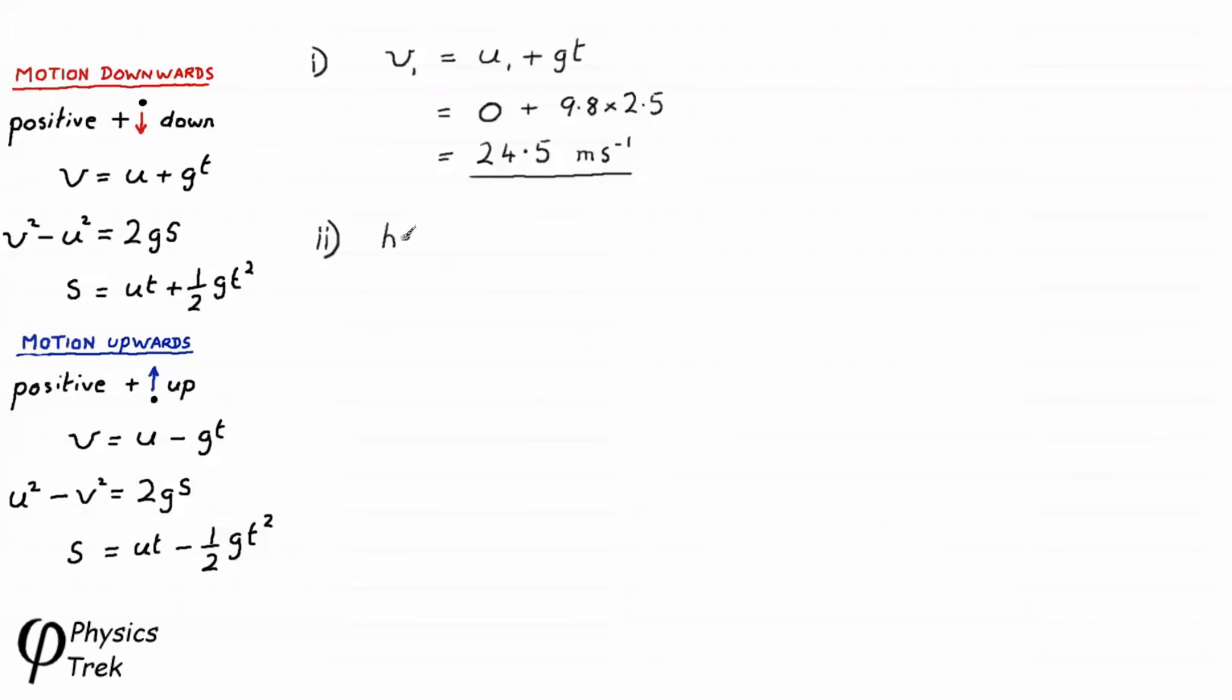And now to the second part. Okay. The height of the cliff, we call it s subscript c, is given by v1 squared minus u1 squared is equal to 2g sc. We need to make sc the subject. So let's just first change the equation around. So we have 2g sc is equal to v1 squared minus u1 squared. We need sc to be the subject. So we divide both sides by 2g, cancels out on the left, and we're left with it underneath. So sc is equal to v1 squared minus u1 squared divided by 2g. So let's put the numbers in. That equals 24.5 squared minus 0 squared divided by 2 times the value of g, which is 9.8. And this comes to 30.625 meters.